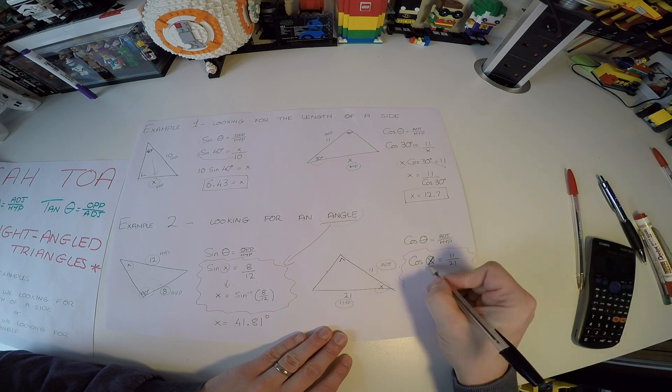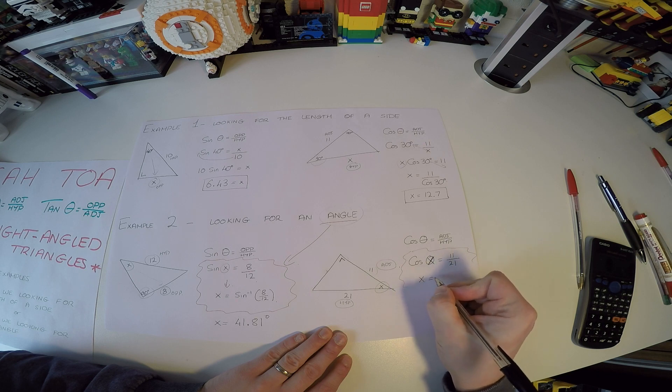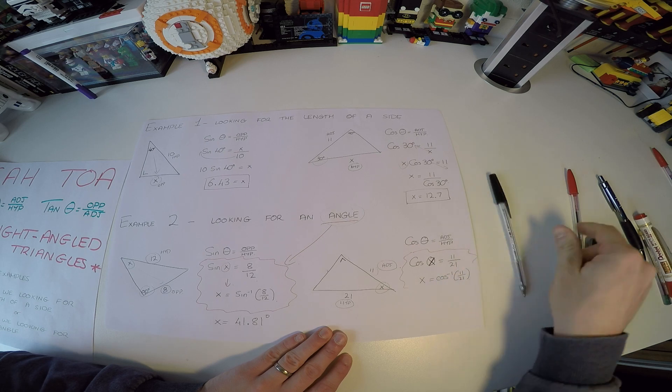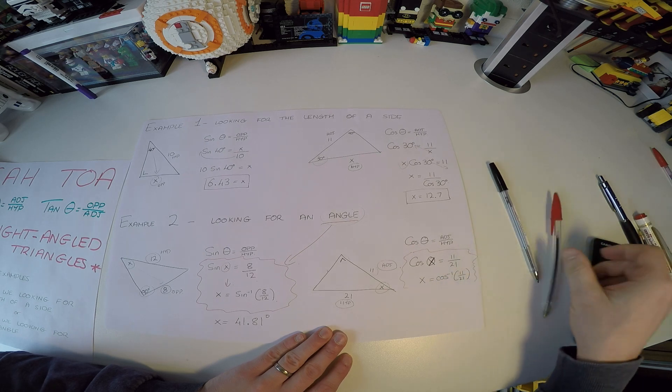So we want X on his own. So cosine, we want to get rid of that. So then we can say X. And since cosine is going here, we bring him over here as a cosine inverse of 11 over 21. So this is the main big step we're going to have to get.